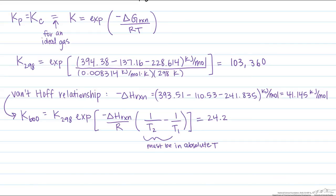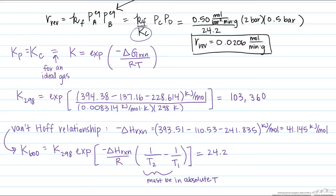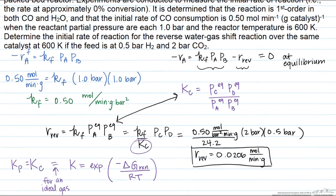We find that the equilibrium constant has dropped way down to a value of around 24 at 600 Kelvin. Now we have everything needed to solve for the reverse reaction rate — the only missing value was Kc, and now we have it. Plugging in our forward rate constant, the equilibrium constant, and the partial pressures of CO2 and hydrogen given as 2 bar and 0.5 bar respectively, we ultimately solve for the initial rate of the reverse reaction of around 0.02 moles per minute gram of catalyst. The given information for the initial forward rate, combined with the equilibrium constant at 600 Kelvin, enables us to solve for the initial rate of the reverse reaction.